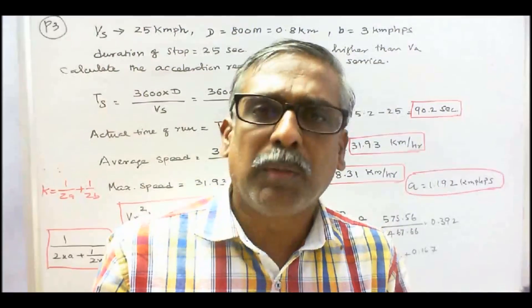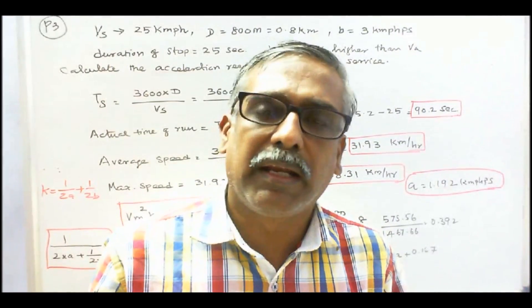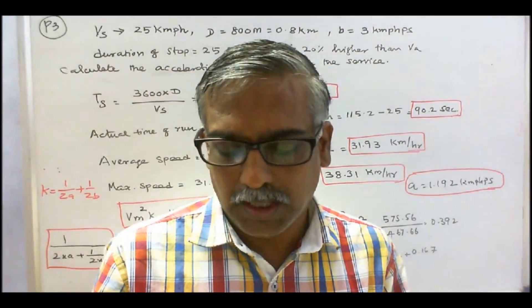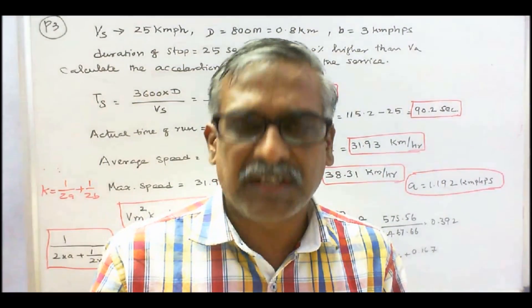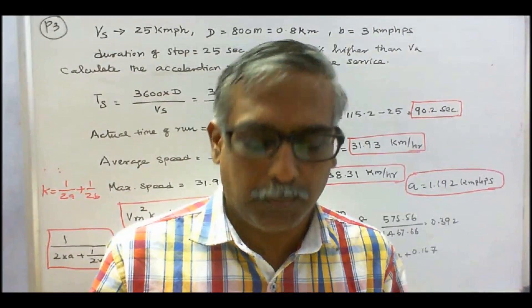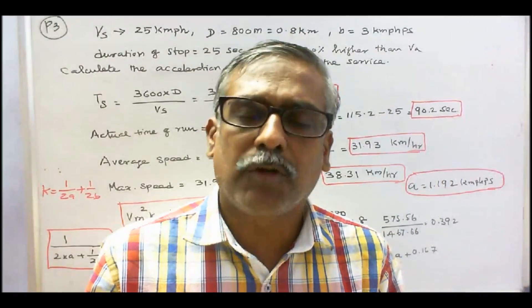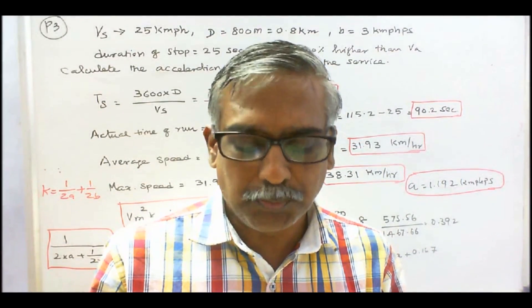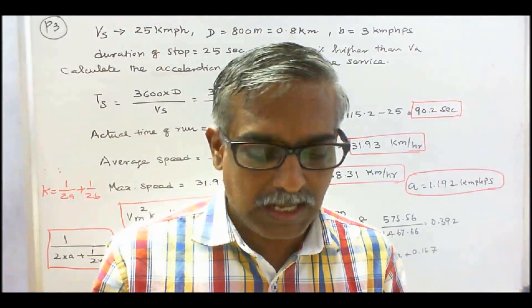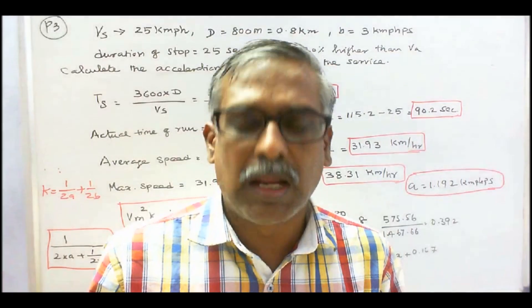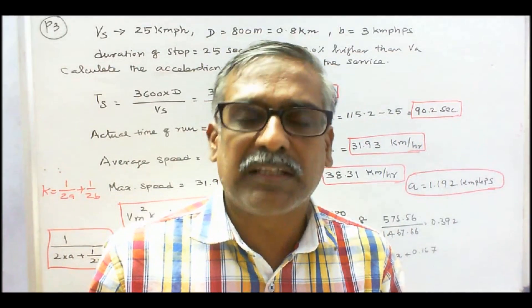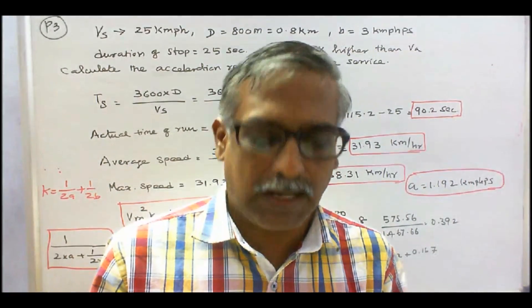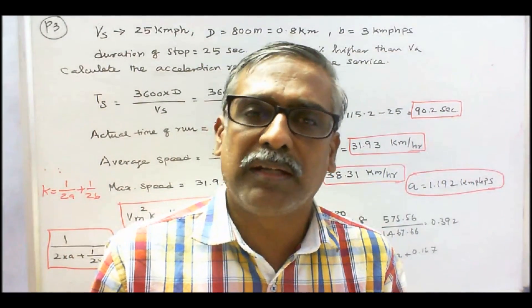Problem 3: an electric train has a schedule speed of 25 km per hour between stations 800 meters apart. The duration of stop is 25 seconds. The maximum speed is 20 percent higher than the average running speed and the braking retardation is 3 km per hour per second. Calculate the rate of acceleration required to operate the service.